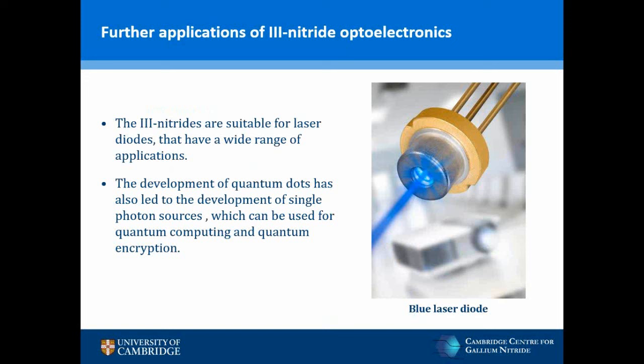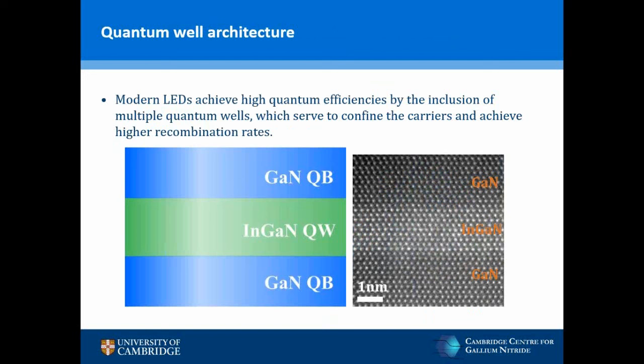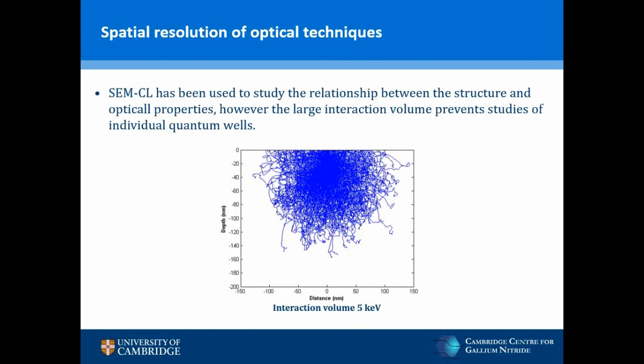Modern nitrides achieve high efficiencies in part by using the multiple quantum well structure, which uses a thin epitaxial layer of a narrow band gap material — such as indium gallium nitride quantum wells for blue LEDs — contained within gallium nitride barriers that confine the carriers, leading to higher radiative recombination rates. The structure and composition of the active quantum well region is responsible for the optical characteristics, and studying those with nanoscale resolution is fundamental for developing higher efficiency optoelectronic devices.